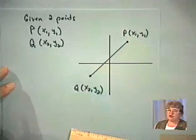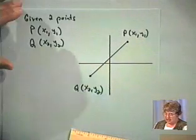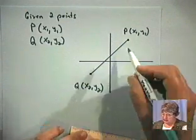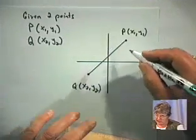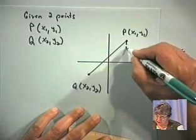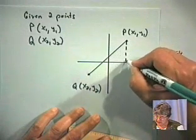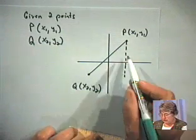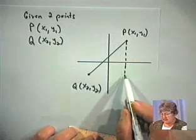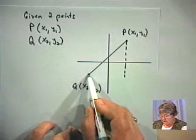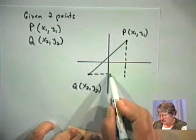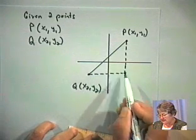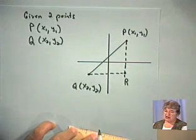We're going to do that in the same way that we did with the earlier problem. We can form a right triangle by dropping a perpendicular to about the level of point Q through the x-axis from point P, and from Q we'll drop a perpendicular to the side through the y-axis. And we're going to form the point R.